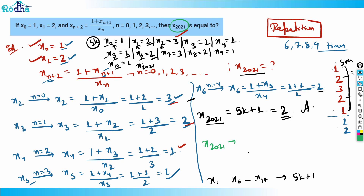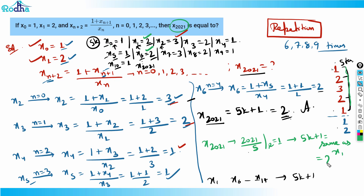Directly: 2021 divided by 5 gives remainder 1, so it is of the form 5k+1. That means x2021 is the same as x1, which equals 2. So 2 is the answer. That's the complete logic behind this question.